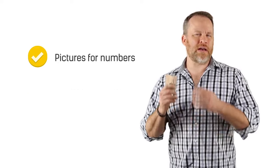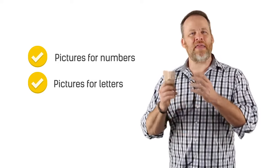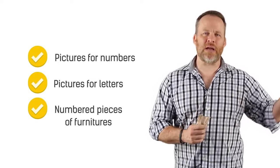So real quick recap. The first thing that I did is I created pictures for numbers. Then I created pictures for letters. And then I numbered pieces of furniture in my house. Then I went to Times Square.